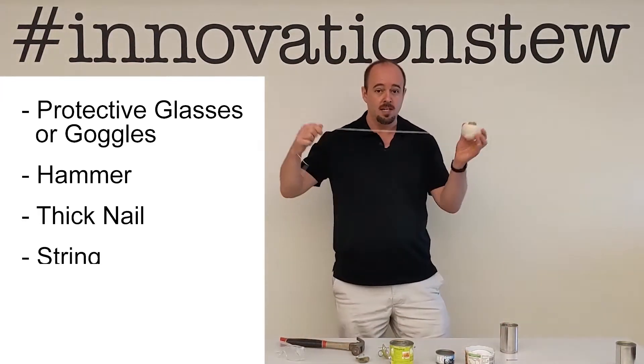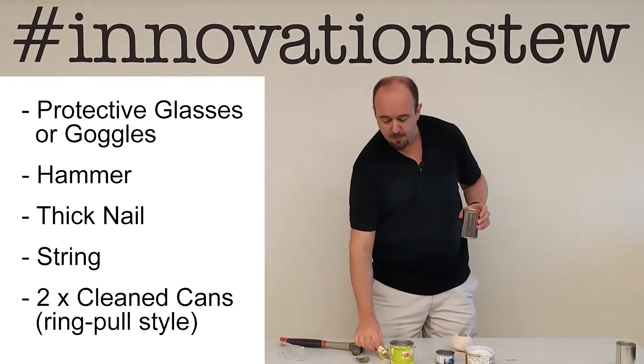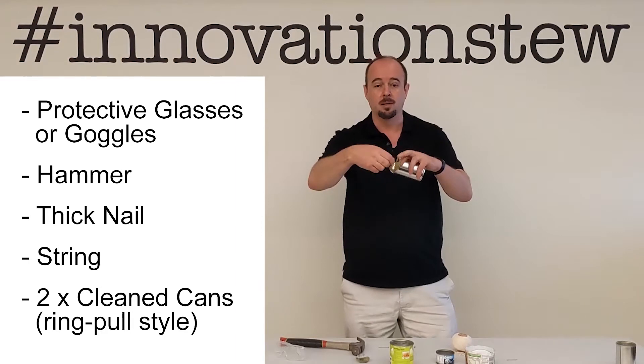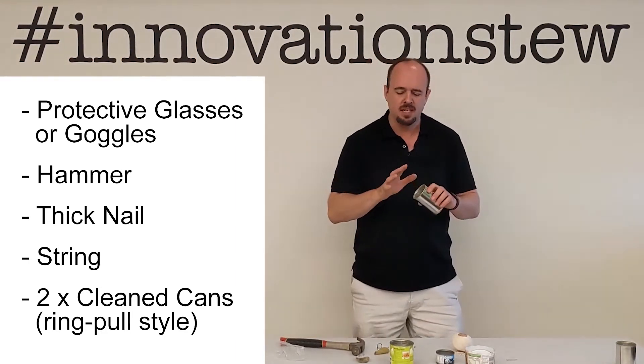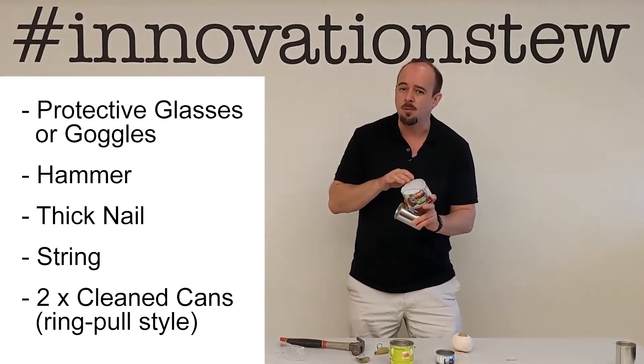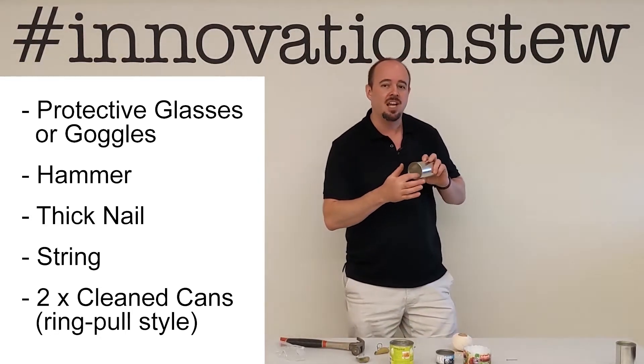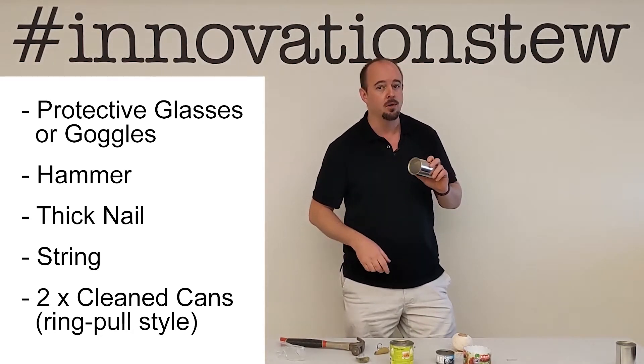You're going to need some string and at least two tin cans. I recommend you use tin cans that have ring pull lids because the end result is slightly safer than the ones where you cut them off using a tin opener. The tin opener ones can be pretty jagged, but be aware even with the ring pull ones the edge can be a little sharp, so be careful when you're using your tin can telephones.